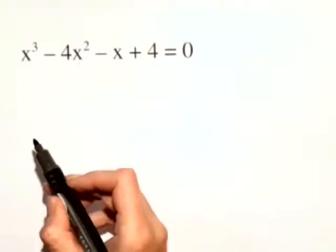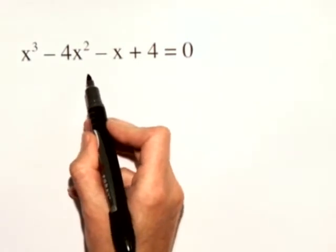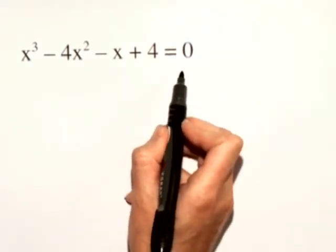For our next problem, we have an equation to solve. We have x cubed minus 4x squared minus x plus 4 is equal to 0.